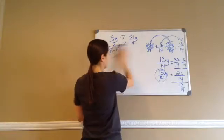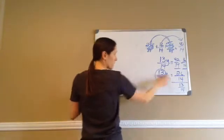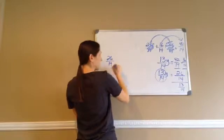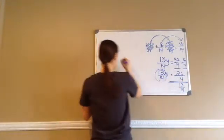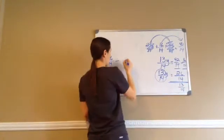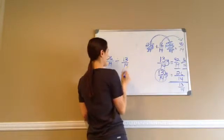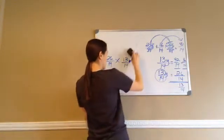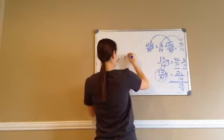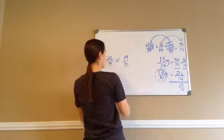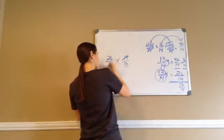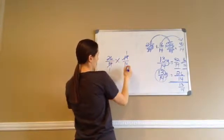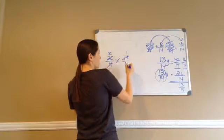Then we come over here and rewrite this: 26 over 14 divided by 13/14. Since we can't divide by a fraction, we have to multiply — and 13/14ths becomes 14/13ths. Those 14s cross out and become 1. And 26 breaks down: 13 times 2 is 26.